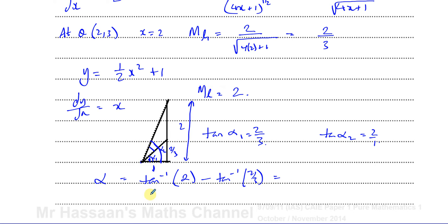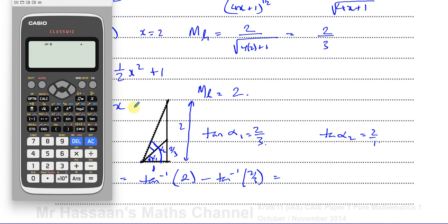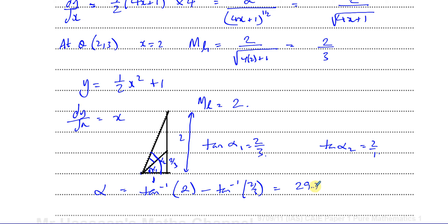Making sure we're in degree mode: arctan(2) minus arctan(2/3) gives 29.7448 degrees, which to 3 significant figures is 29.7 degrees. That's the value of alpha — the angle between the two tangents.